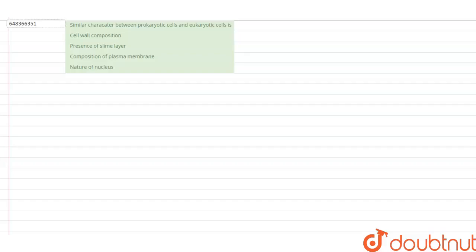Hello everyone, today we will be solving a question in biology. The question is: Similar character between prokaryotic and eukaryotic cells is. The options are: Cell wall composition, presence of slime layer, composition of plasma membrane, and nature of nucleus.